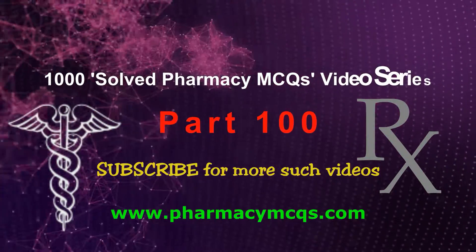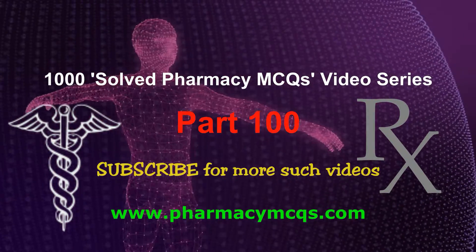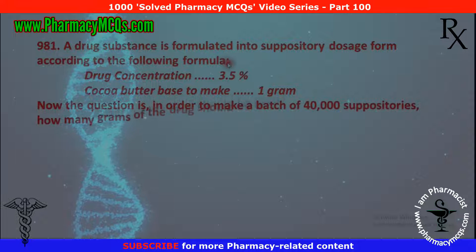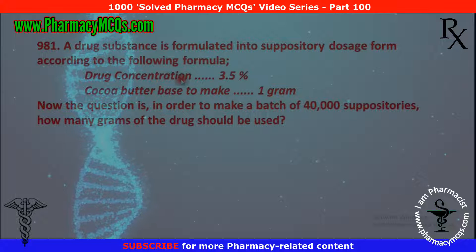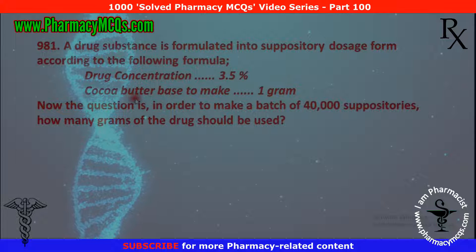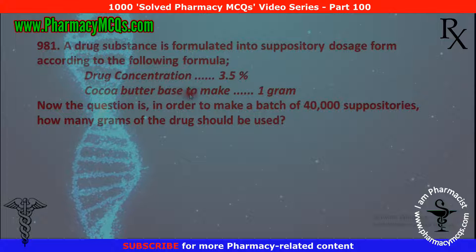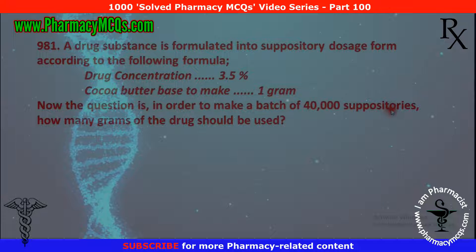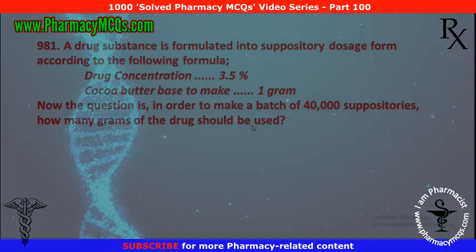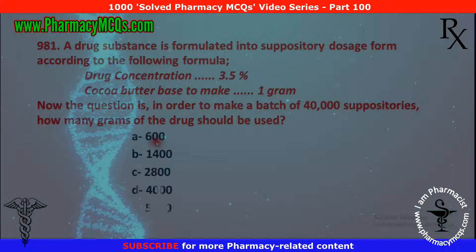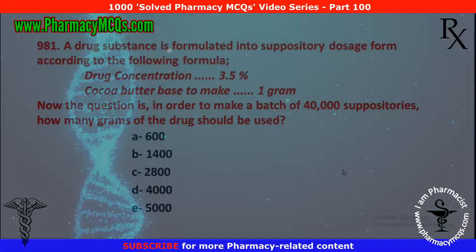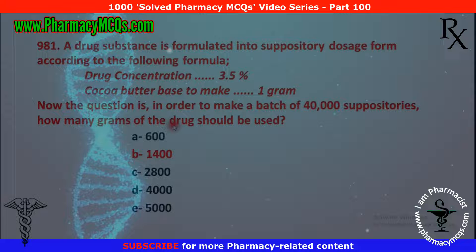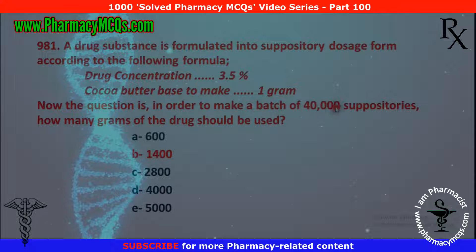Hello friends and welcome to the final part of the solved pharmacy MCQ's video series. Our first MCQ: a drug substance is formulated into suppository dosage form according to the following formula. Drug concentration is 3.5% while the base concentration is 1 gram. In order to make a batch of 40,000 suppositories, how many grams of the drug should be used? The correct option is 1400 grams — 1400 grams of the drug are needed to make a batch of 40,000 suppositories.